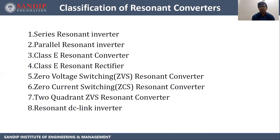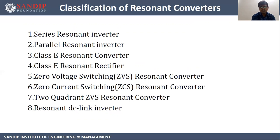Classification of resonant converters: series resonant, parallel resonant, class E resonant, class E resonant rectifier, ZVS (zero voltage switching) resonant converters, ZCS (zero current switching) resonant converters, two-quadrant ZVS resonant converters, and resonant DC link inverters.